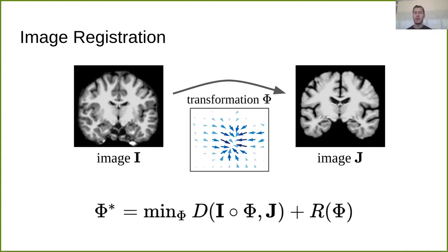We can encode constraints on the transformation here, so usually we want to avoid domain folding. And we can also encode prior beliefs about how bendable we think the material is.